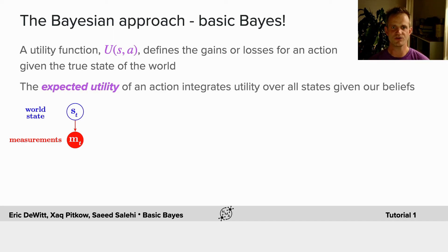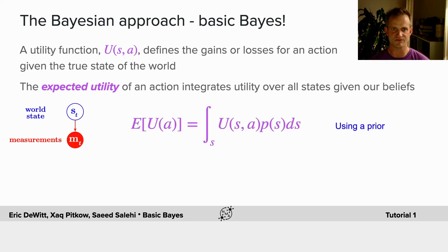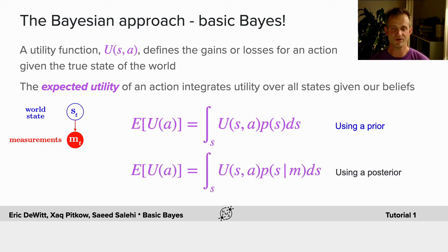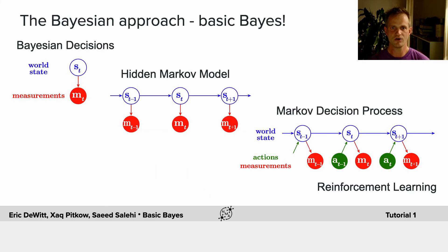However, we often need to know the expected utility of an action, which integrates the utility over all states given our beliefs. If we just had our prior beliefs, we would integrate across all the states with our prior information. Or, if we've observed a measurement, we could do the same thing using our posterior. Over the days ahead, you're going to see how to extend this when things change in time and when we add actions and fully define something called a Markov decision process, which is the fundamental basis for reinforcement learning — which is actually the primary area that I work in.